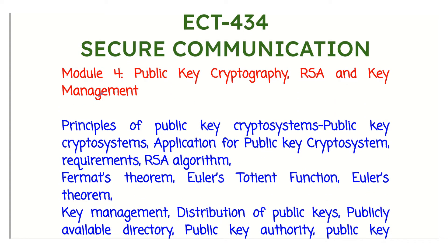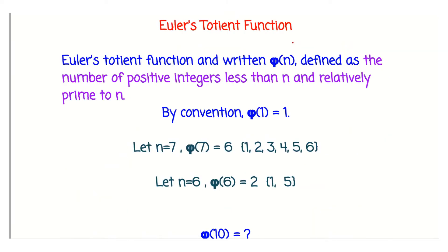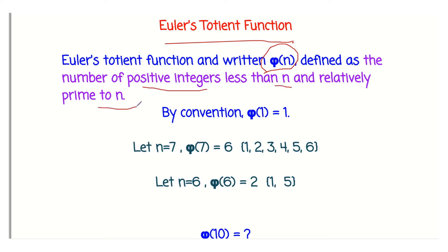Dear students, welcome to SATC Secure Communication Module 4. The next topic is Euler's Totient Function, φ(n). It is defined as the number of positive integers less than n and relatively prime to n.